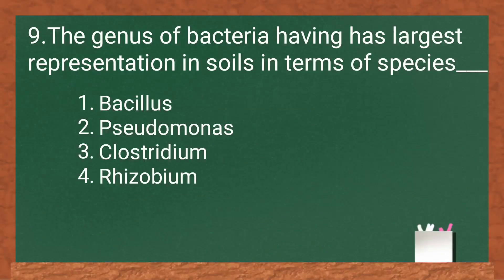The genus of bacteria having the largest representation in the soil in terms of species: options are Bacillus, Pseudomonas, Clostridium, and Rhizobium. The answer is Bacillus.